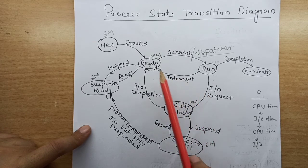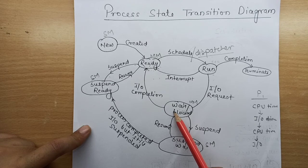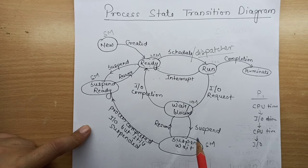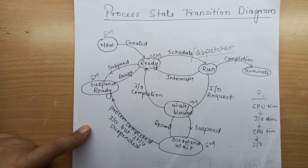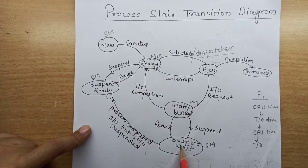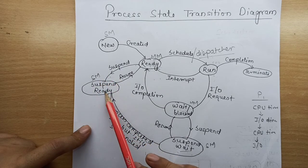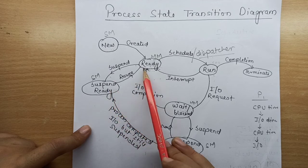Once the high-priority process finishes and leaves, space opens up in main memory and the suspended process can be resumed. However, if while in suspend wait the process completed its I/O operation and now needs the CPU, the operating system changes its state from suspend wait to suspend ready — because it completed I/O but is still suspended in secondary memory. Similarly, if a process was suspended from the ready state, it goes to suspend ready.